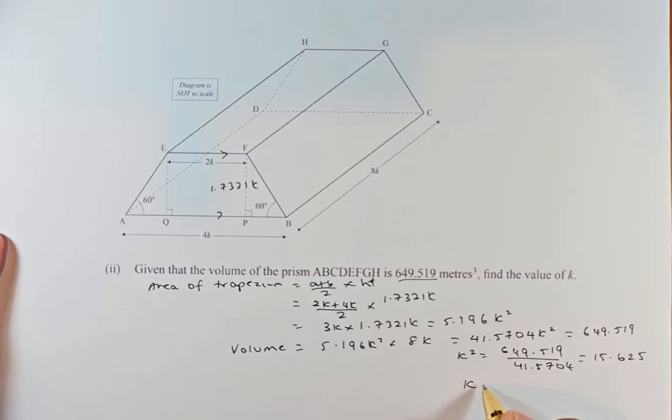To find k, we're going to take the cube root of 15.625. Put it in your calculator and the answer is going to be 2.5 meters. So I'll repeat again: you find the area is 5.196k squared and then you multiply by 8k, so you get cube 41.5704k cubed. You solve it by dividing by 41.5704 and then you cube root the answer and the answer is 2.5. That is an excellent question.